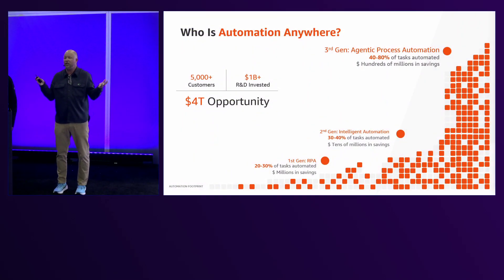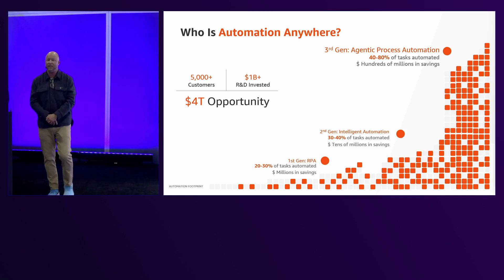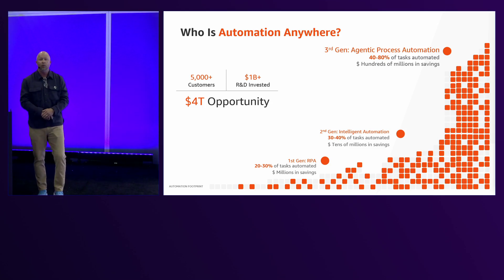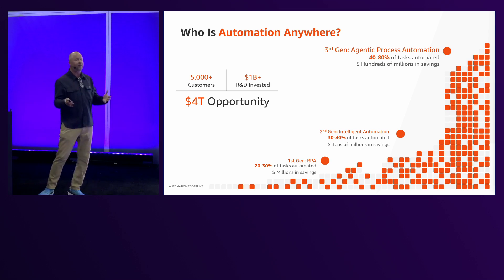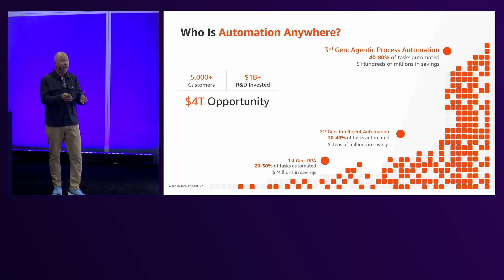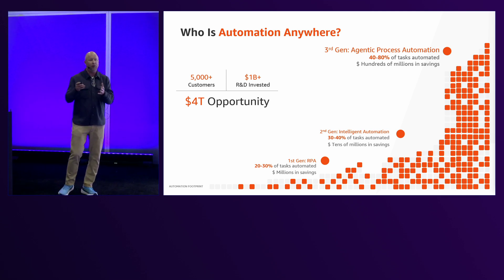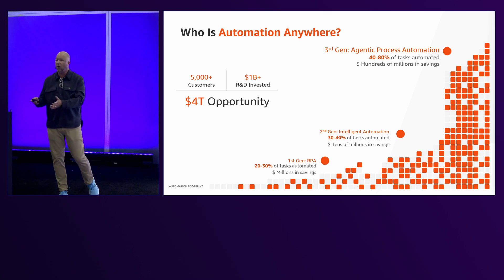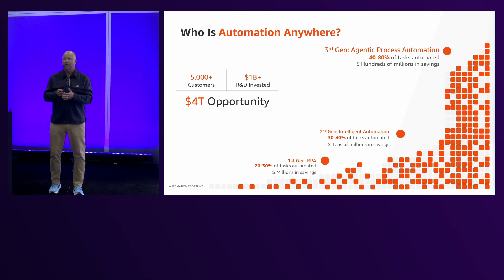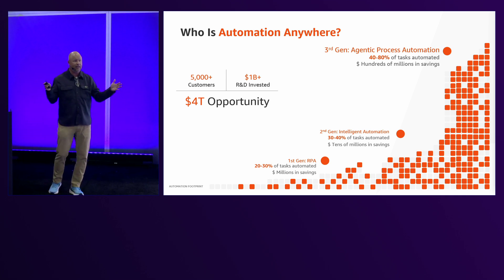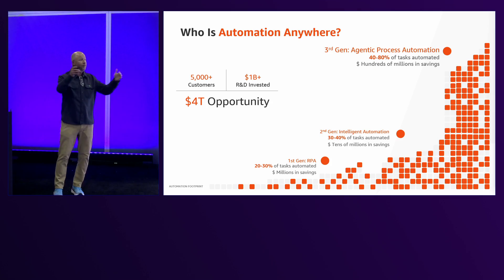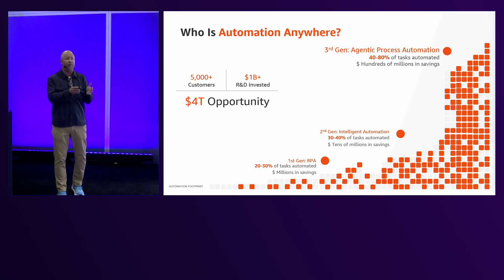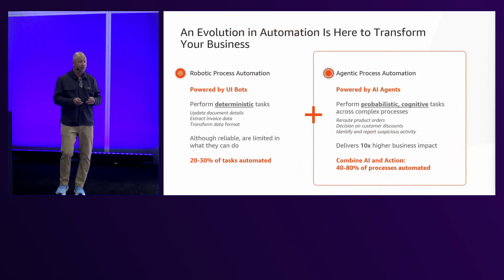Who is Automation Anywhere? Automation Anywhere has been in the business for 20-plus years. We were a pioneer in something called robotic process automation. Over the last handful of years, we've developed those solutions from RPA to add document automation, process discovery, our own version of copilot, and now agentic automation. The industry has expanded significantly in the last couple of years because of gen AI, so the sphere of influence of tasks that we can automate has gone from few to many. And evolution is here to transform your business.